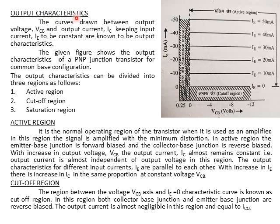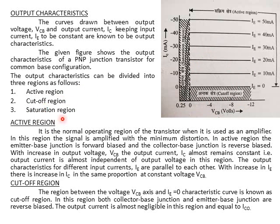Now, Output Characteristics (निर्गम अभिलाक्षणिक): the curves drawn between output voltage VCB and output current IC, keeping input current IE constant, are known as output characteristics. The given figure shows the output characteristics of a PNP junction transistor for Common Base Configuration. The output characteristics can be divided into three regions: Active Region (सक्रिय शेत्र), Cut-off Region (अंतक शेत्र), and Saturation Region (संतृप्त शेत्र).